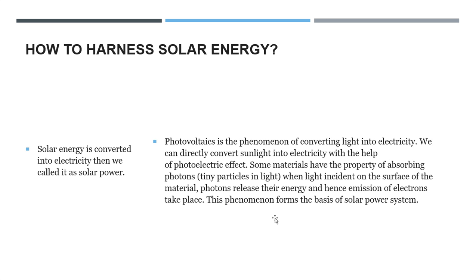Moving to how you actually harness solar energy — solar energy can be converted into electrical energy, and then we call it solar power. What's actually going on when we harness solar energy is that photovoltaics are converting those electromagnetic waves or sunlight into electricity. We can directly convert the sunlight into electricity with the help of the photoelectric effect. It absorbs photons — the tiny light particles — that interact with the solar panels, then releases their energy and the emission of electrons takes place. This whole process is known as the solar power system.